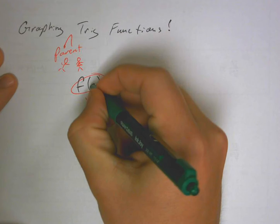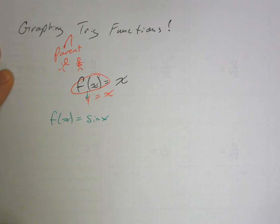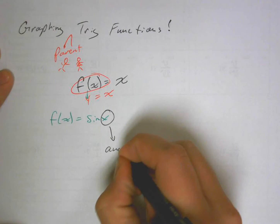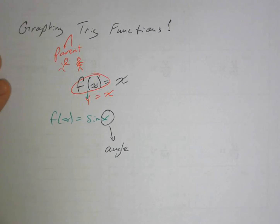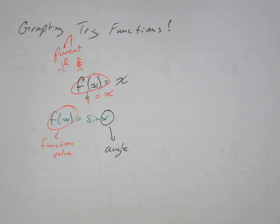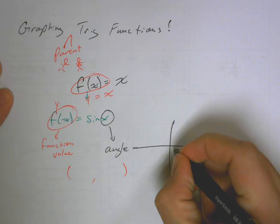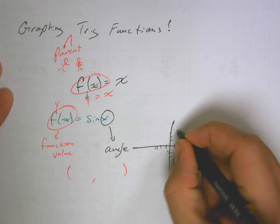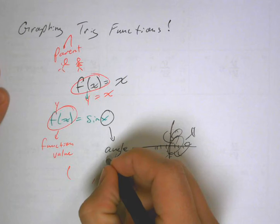f(x) means y, so don't forget that. If we have the function f(x) = sine x, the x input was our angle — like sine of π/4 or cosine of π/4. Those are the angle inputs and what came out was our function value. On a Cartesian plane, your angle will be your x value and your function value will be your y value.